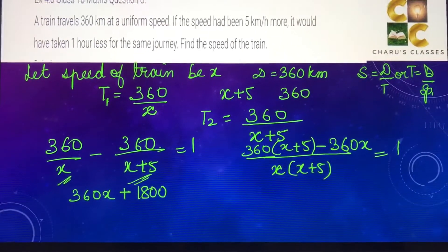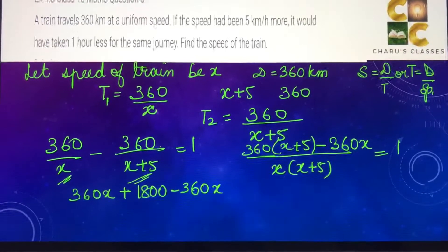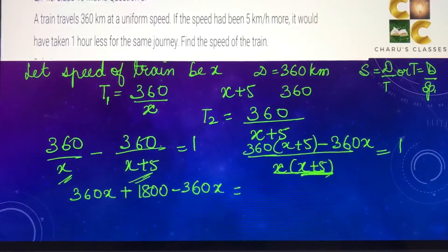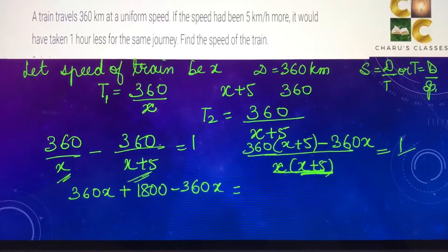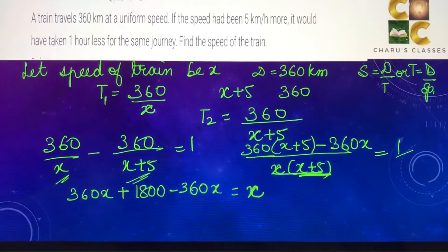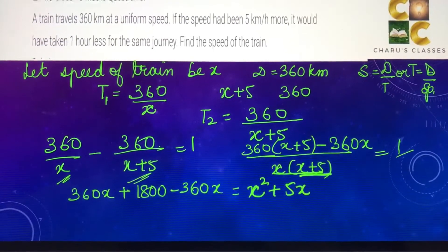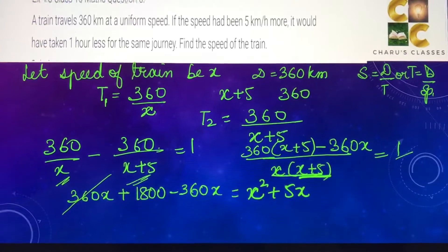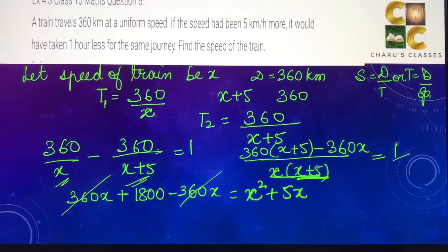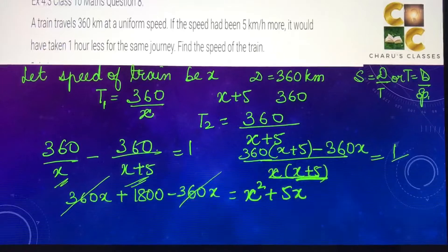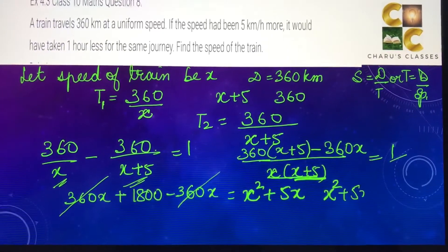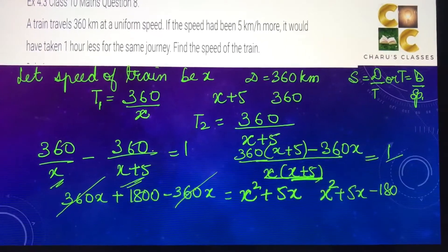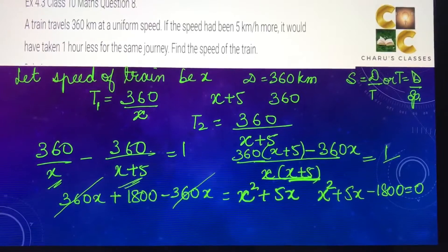This equals 1, or we can say 360x + 360 × 5, which is 1800, minus 360x equals, we can take this to the other side and cross multiply with 1. So it equals x² + 5x. The 360x and -360x cancel. So now we have x² + 5x - 1800 = 0.